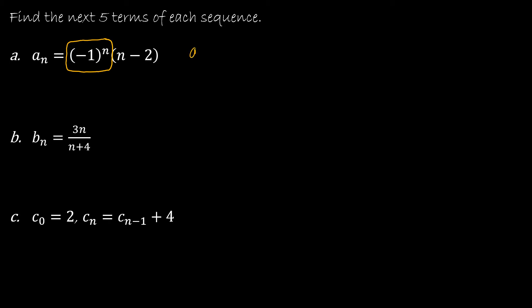So a sub 1 would be plugging 1 in for n: that would be negative 1 to the 1st, and then 1 minus 2. Negative 1 to the 1st is negative 1, and 1 minus 2 is negative 1, so my first result is 1.